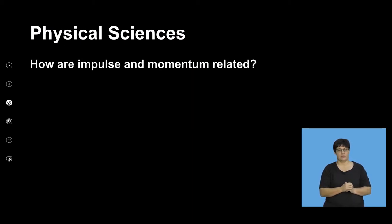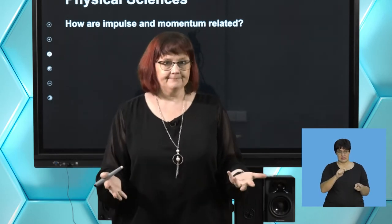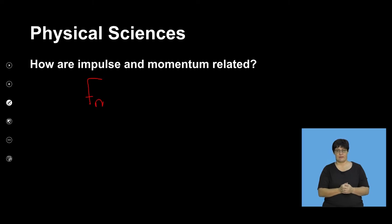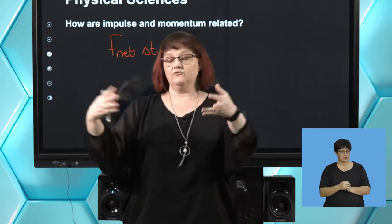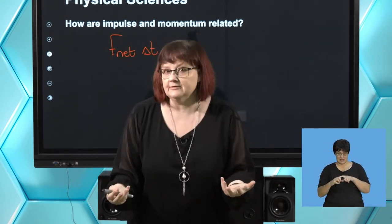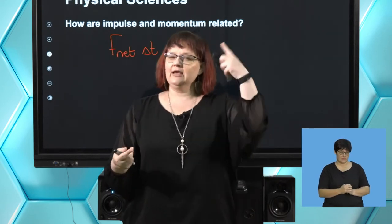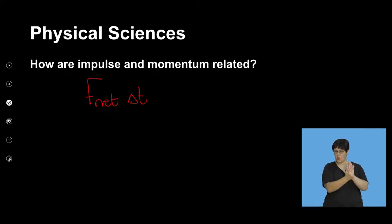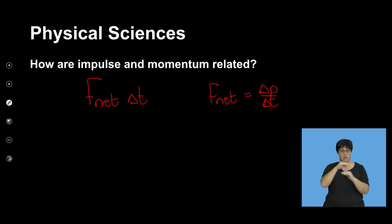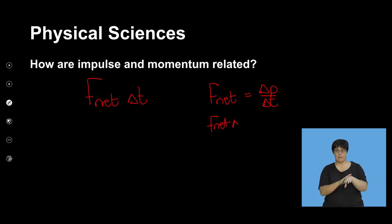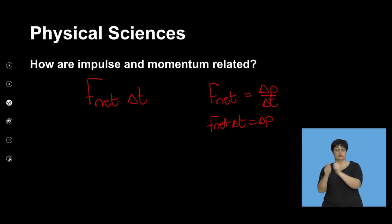So how are impulse and momentum related? Impulse is F net times time. When a force acts on an object, the object's momentum will change. We think back to Newton's second law in terms of momentum: F net equals changing momentum over changing time.